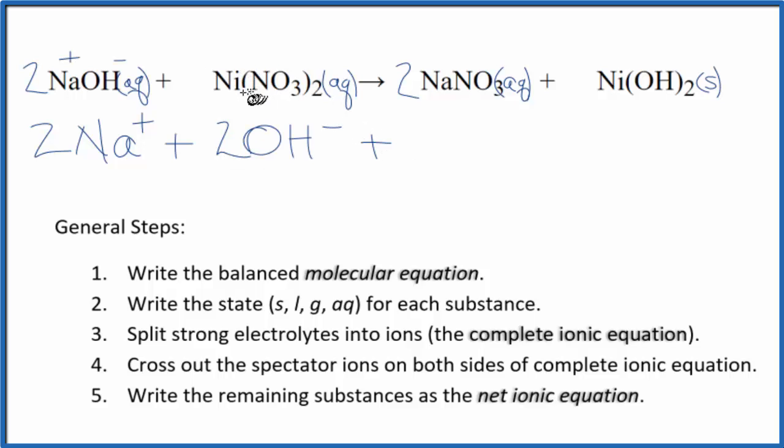And then nickel, it's a transition metal, so we need to look at what it's bonded to to figure out its ionic charge. Nitrates are always 1 minus. And we have 2 of them. So this has to be 2 plus. That's why we call it nickel 2 nitrate. So we have nickel 2 plus ion, plus we have 2 of these nitrate ions, NO3 minus. So these are the reactants in our net ionic equation.